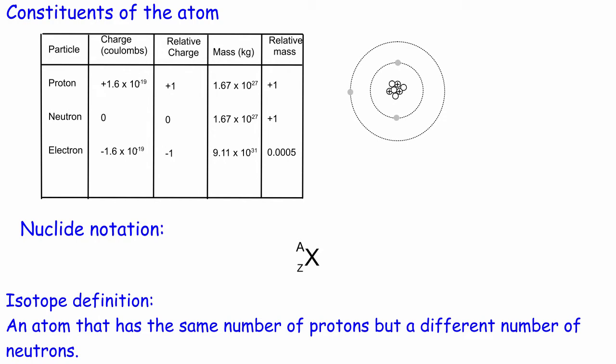Hello and welcome to this video where today we're going to be looking at the constituents of an atom. Most of this first part will be a revision from GCSE, but then we're going to introduce a new quantity for A-level which is called the specific charge. But before we do that, we're just going to have a really quick recap of the constituents of an atom.